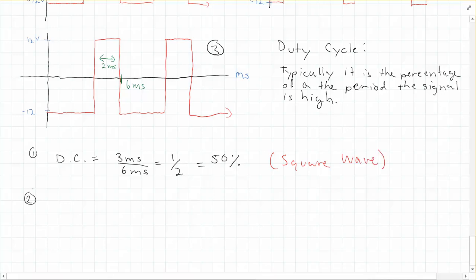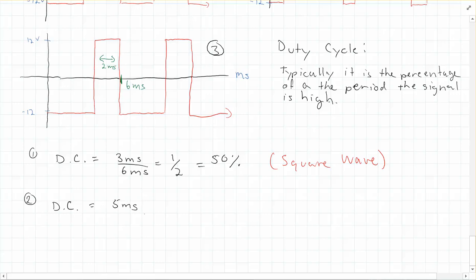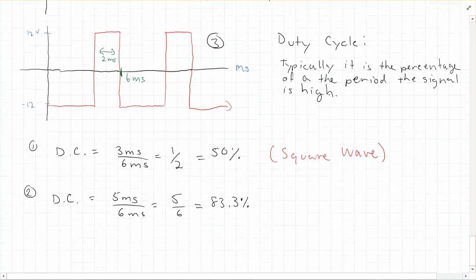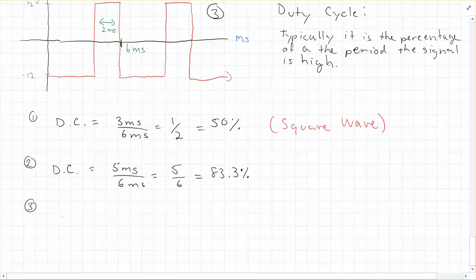For figure two: the duty cycle is 5 milliseconds over 6 milliseconds, which is 5/6, approximately 83.3%. For figure three: the duty cycle is 2 milliseconds over 6 milliseconds, which is 2/6, or one-third — about 33.3%. So there's a different duty cycle for each of these signals.